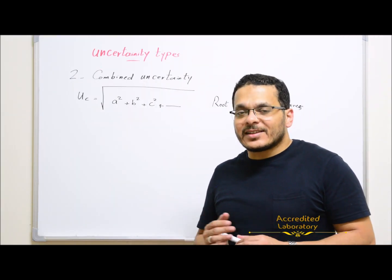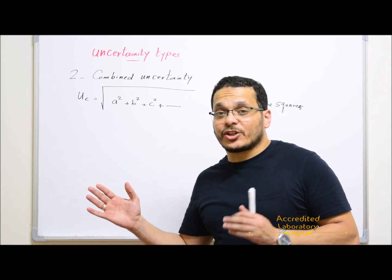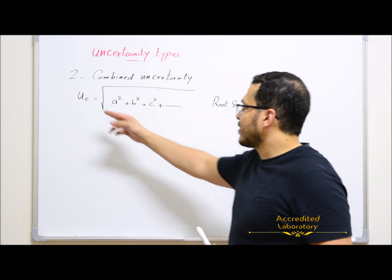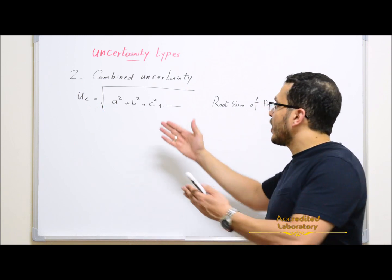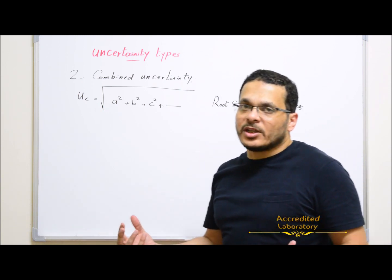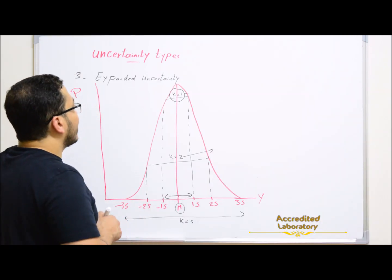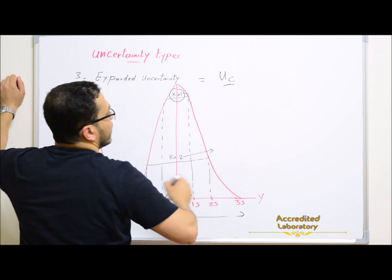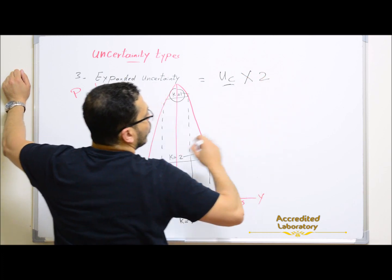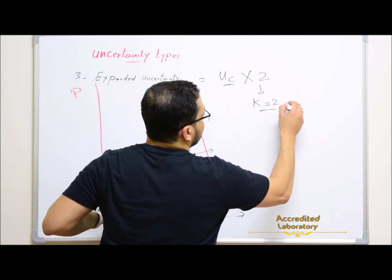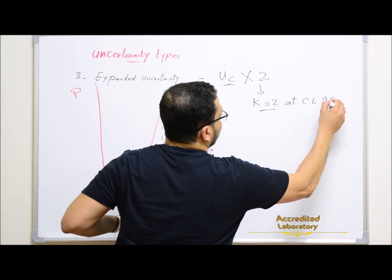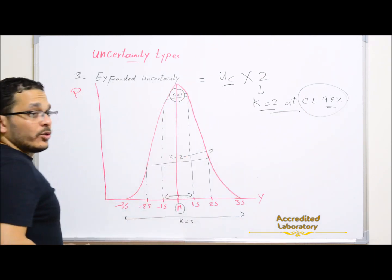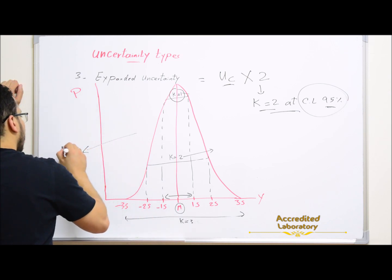After the individual standard uncertainties are calculated by Type A or Type B evaluation, they are combined together to get combined uncertainty, which is equal to the root sum of squares of all individual uncertainties. At the end, expanded uncertainty is calculated by multiplying the combined uncertainty by 2, which is the coverage factor at confidence level 95%.